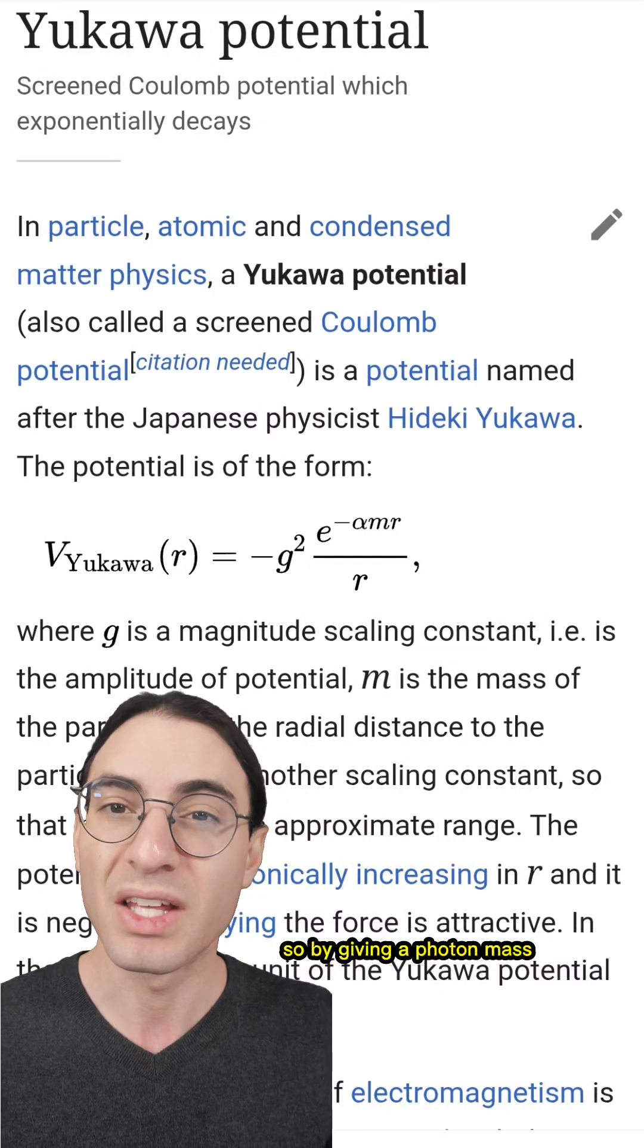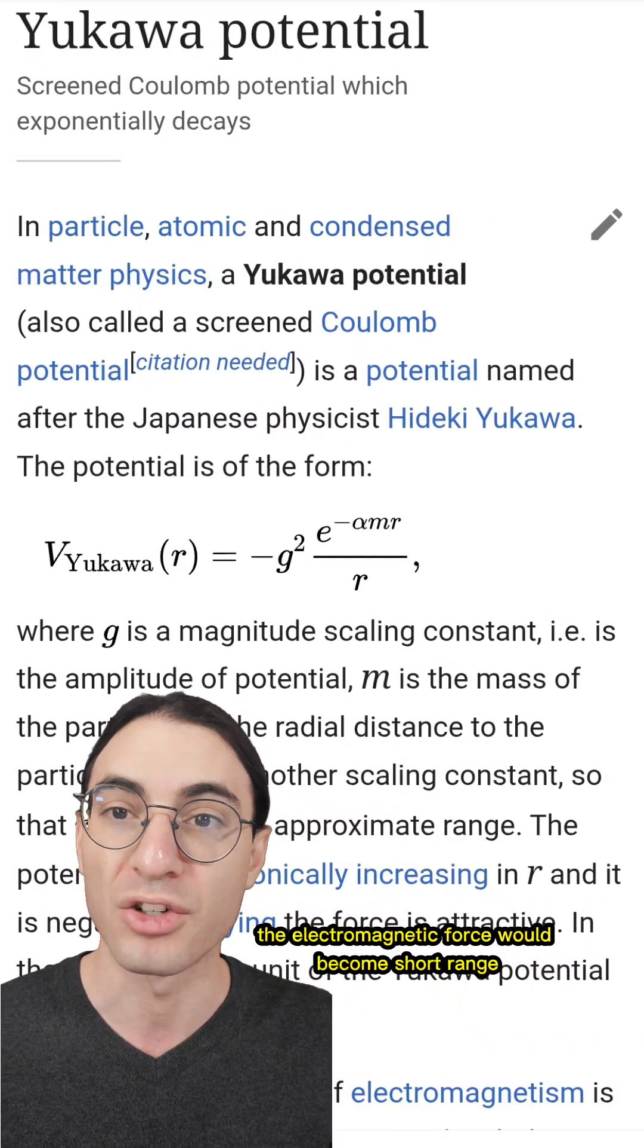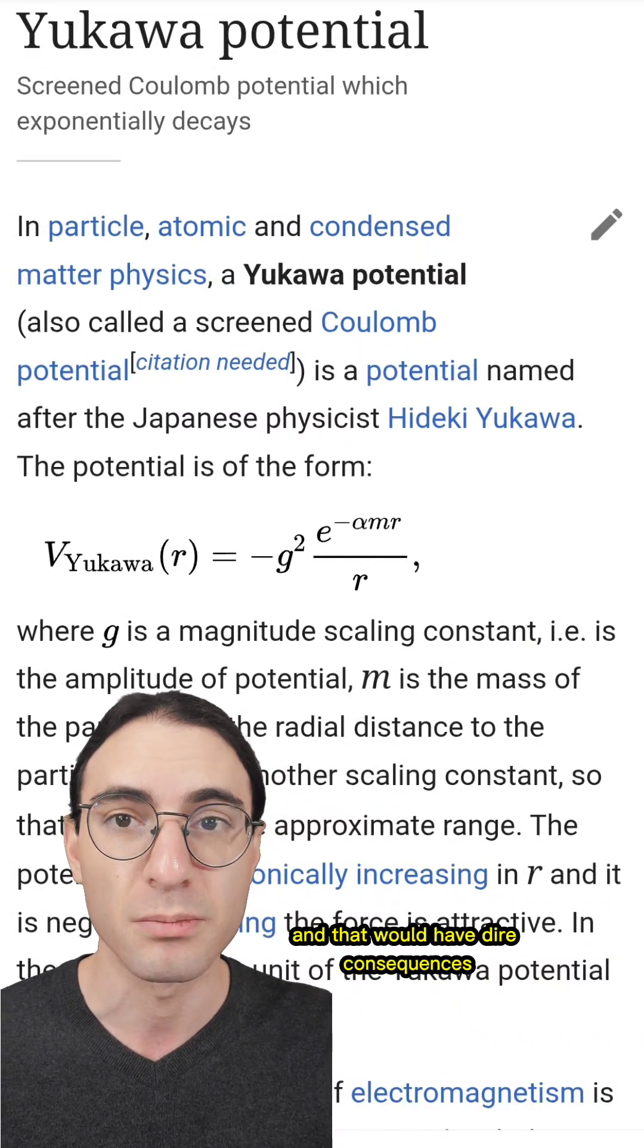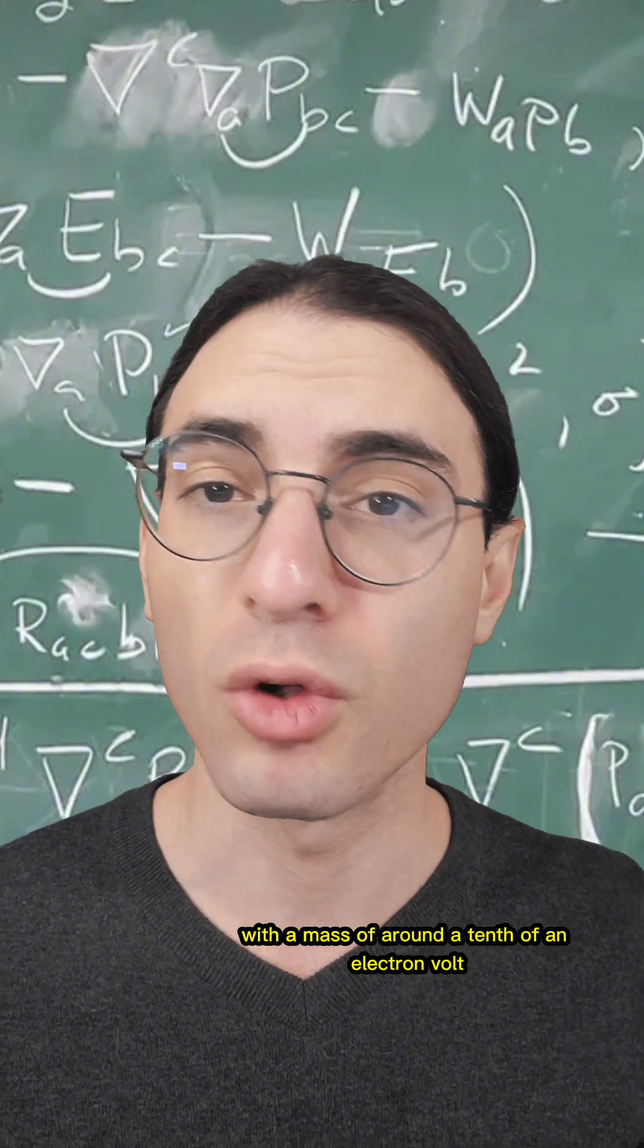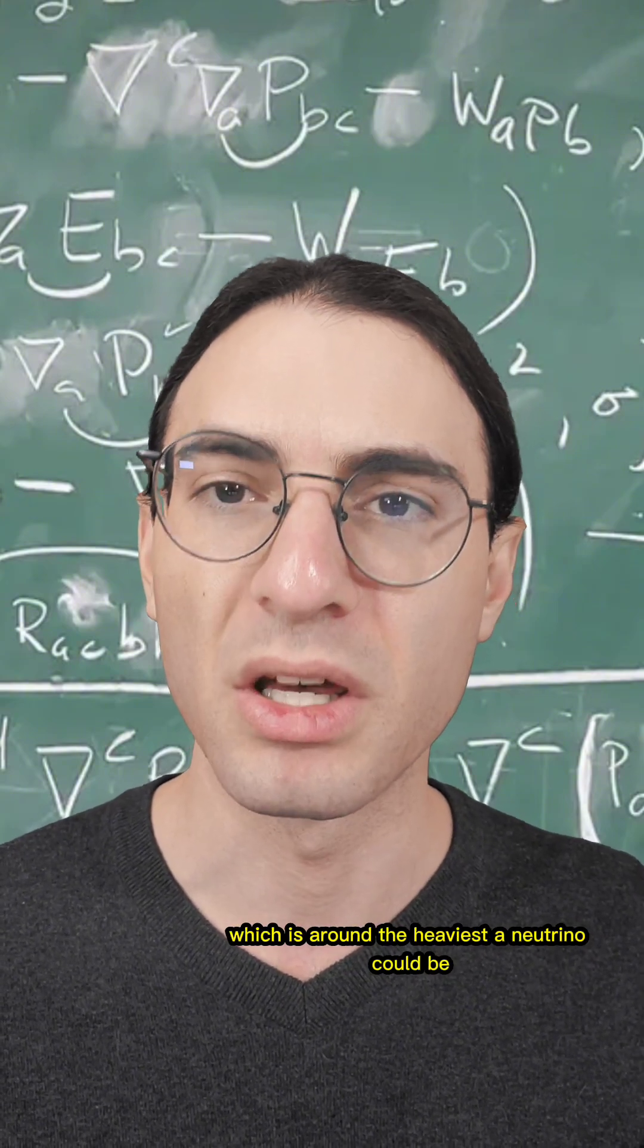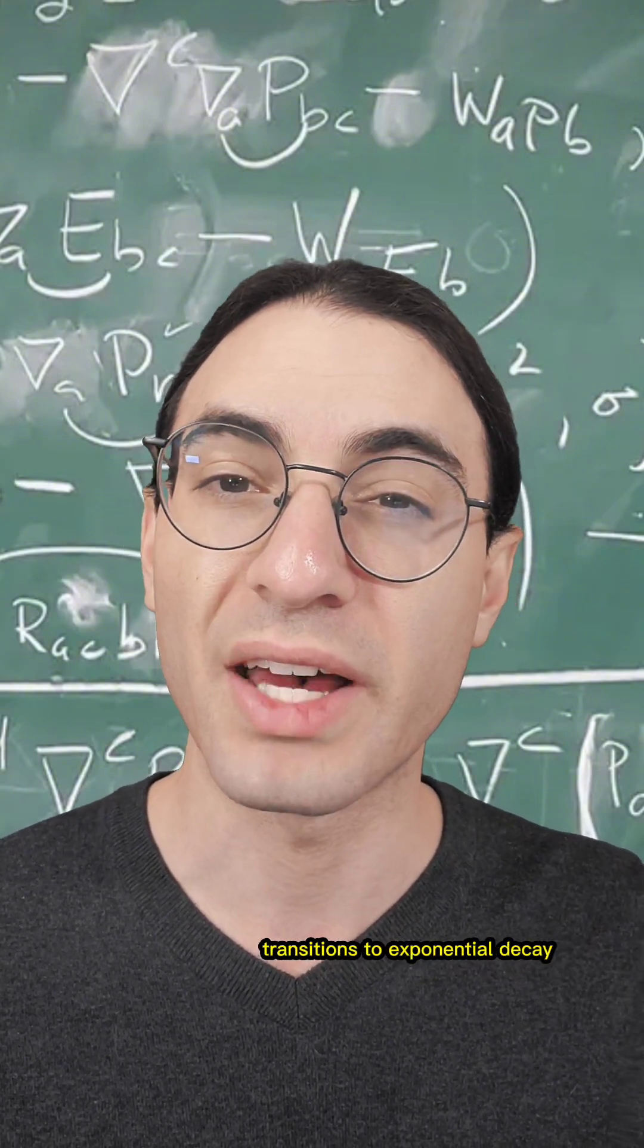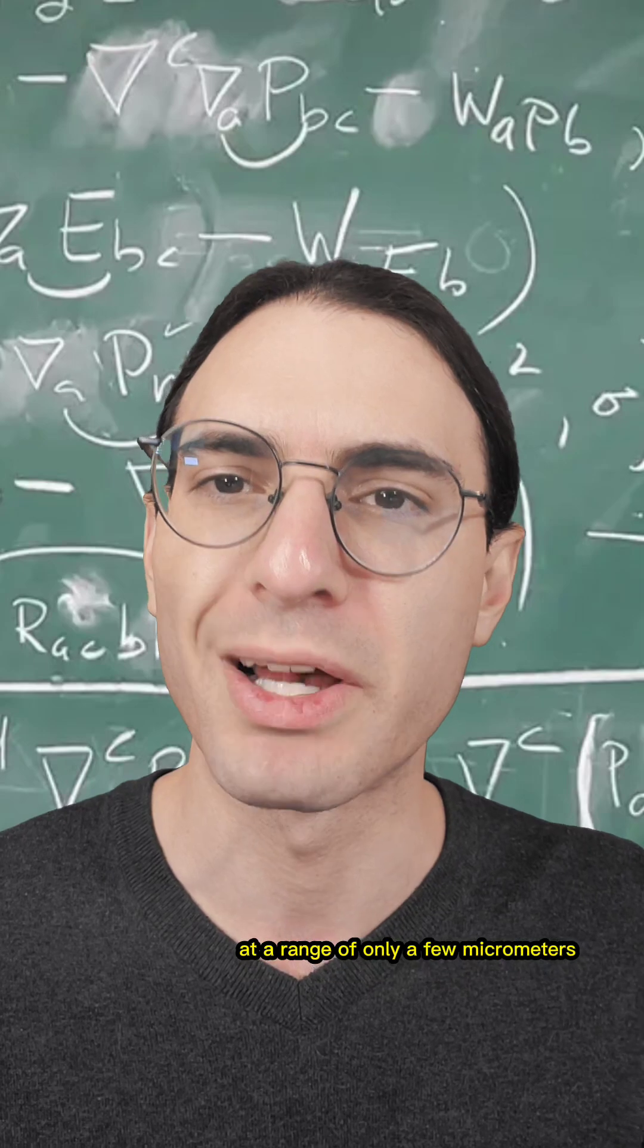So by giving a photon mass, the electromagnetic force would become short-range, and that would have dire consequences. With a mass of around a tenth of an electron volt, which is around the heaviest a neutrino could be, the electromagnetic force transitions to exponential decay at a range of only a few micrometers.